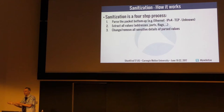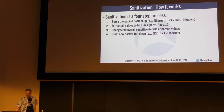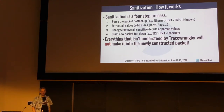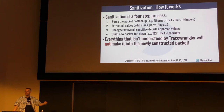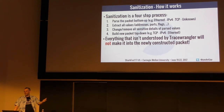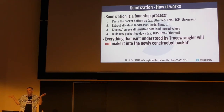Keep in mind: everything that Trace Wrangler doesn't understand will not make it into the newly constructed packet — it will be lost. The key setting is 'Remove all unknown layers and cut away bytes from packet.' If you uncheck this, unknown content will be kept, which could expose sensitive data. If something you need is being dropped, there are two options: change the setting to keep unknown stuff (dangerous), or send me an email with the specification and a PCAP file so I can implement it. Without a PCAP and specification, I can't help.